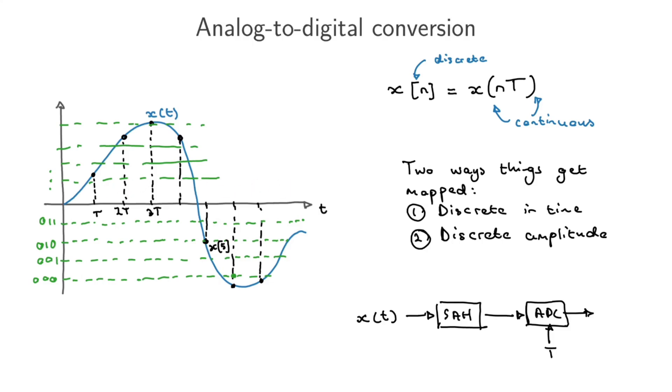So the period in that case is 1 divided by 44,000—44.1 times 10 to the power 3.